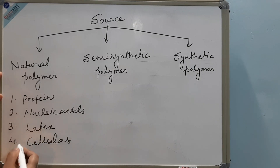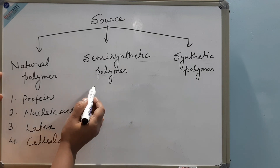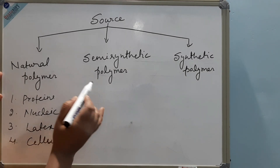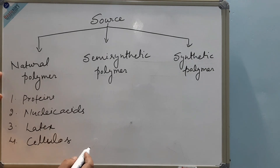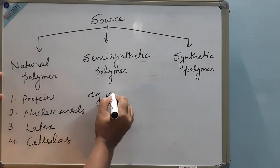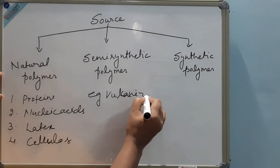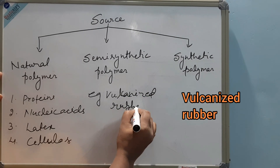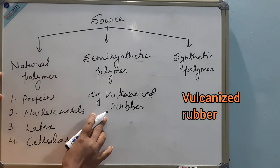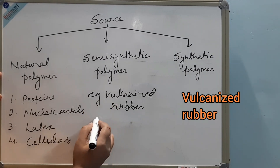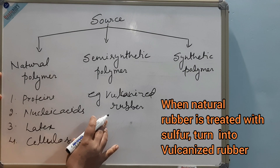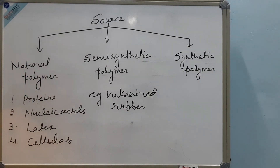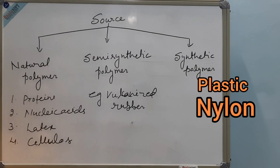Semi-synthetic polymers are those which are present naturally but we use a chemical method and treat them for some chemical property enhancement. An example is vulcanized rubber — rubber is naturally present in our environment, but when we treat it with sulfur to increase its thermal stability, it becomes vulcanized rubber. The third type is synthetic polymers — these are man-made polymers which we make in a lab. Examples include plastic, nylon, and Teflon.